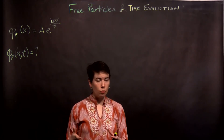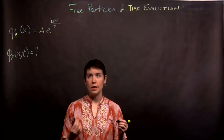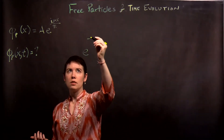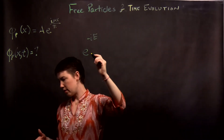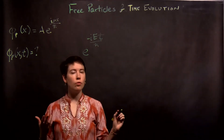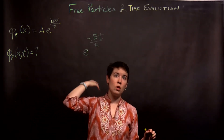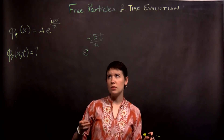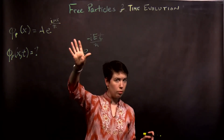In general, we have to convert our state to an energy eigenstate, and then all you have to do is introduce e to the negative i, E of whatever that state is, t over h-bar. We've done that over and over again, whether it was spin or whether it was bound states in a well. The problem is that here we have p, and we need E.